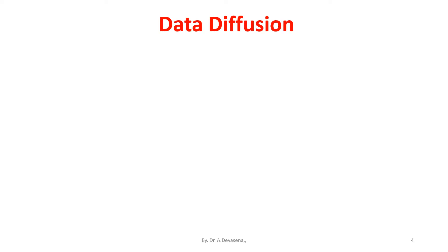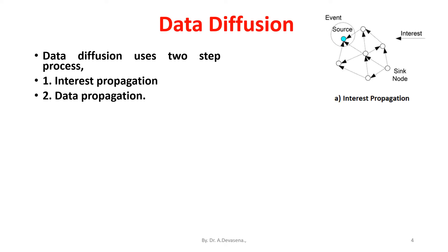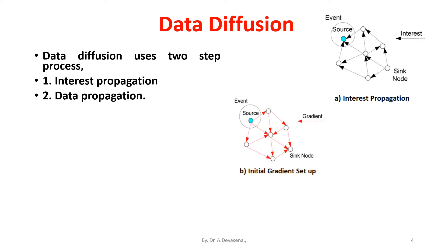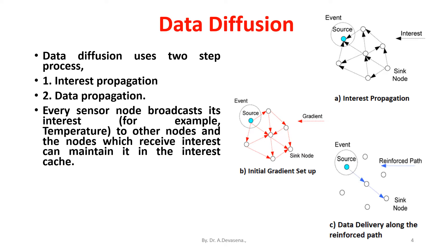Data diffusion uses a two-step process: interest propagation and data propagation. In interest propagation, every sensor node broadcasts its interest — for example, temperature — to other nodes, and nodes which receive the interest can maintain it in the interest cache. Data propagation includes transmitting data from one node to another using shortest paths, as shown in the initial gradient setup.